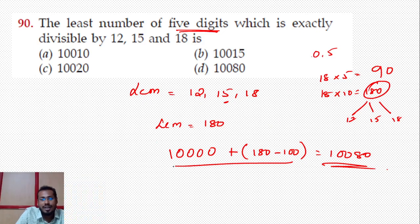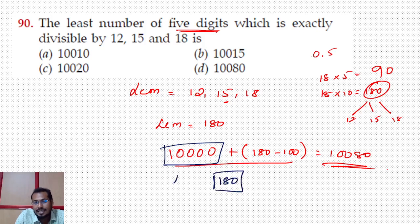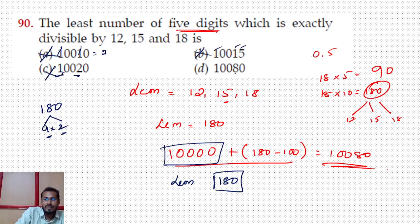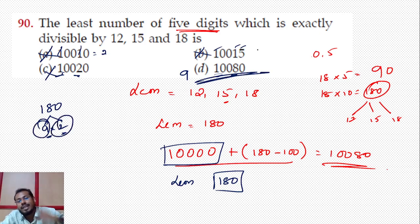Either you can solve like this or check from the options. 10,000 is the least 5-digit number. Our answer should be more than 10,000 but a multiple of 180. Since 180 = 18×10 = 9×2, the number should be divisible by 9 and 2. Checking: 1+0+0+1+0 = 2, not divisible by 9. 1+0+0+8+0 = 9, divisible by 9 and by 2. So this is the only option more than 5 digits and also a multiple of 180.